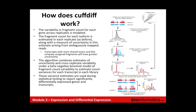How does CuffDiff work? Basically, CuffDiff takes Cufflinks outputs and compares two sets to produce differential expression estimates. It takes into account the variability in fragment count for each gene across replicates. If you have replicates — which is highly recommended — each replicate will have its own fragment count for each transcript, and the variability in those counts will be modeled. The fragment count for each isoform is also estimated in each replicate at both the gene level and transcript level.